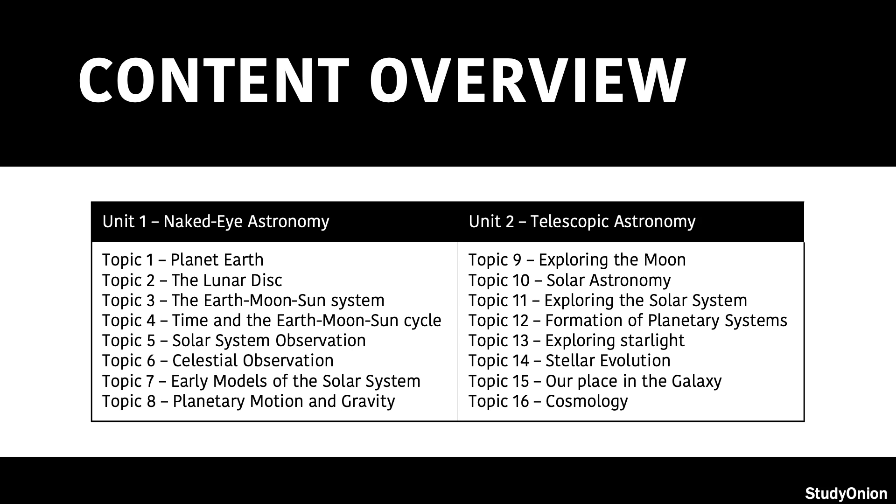Unit 1, which is Naked Eye Astronomy, covers Topic 1, Planet Earth; Topic 2, the Lunar Disk; Topic 3, the Earth, Moon and Sun System; Topic 4, Time and the Earth-Moon-Sun Cycle; Topic 5, Solar System Observation; Topic 6, Celestial Observation; Topic 7, the Early Models of the Solar System; and Topic 8, Planetary Motion and Gravity.